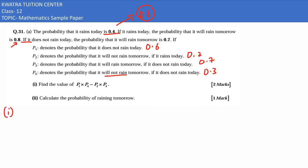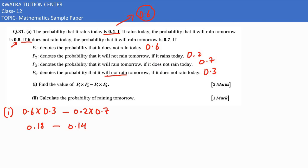Now in the first part, multiplication karna hai — p1 ko p4 se multiply karo. So p1 is 0.6 and p4 is 0.3, minus sign is there, then p2 is 0.2 and p3 is 0.7. So 0.6 into 0.3 gives 0.18, minus sign, and 0.2 into 0.7 gives 0.14.